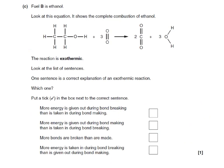Here's a second question. Fuel B is ethanol. Look at this equation showing the complete combustion of ethanol — the reaction is exothermic. One sentence is a correct explanation for an exothermic reaction. Option one: more energy is given out during bond breaking than is taken in during bond making — that's wrong, because energy is given out during bond making. Option two: more energy is given out during bond making than is taken in during bond breaking — that sounds correct. Option three: more bonds are broken than are made — that's irrelevant because different bonds have different energies. Option four: more energy is taken in during bond breaking than is given out during bond making — no, that would be the reverse. So the answer is option two: more energy is given out during bond making than is taken in during bond breaking.